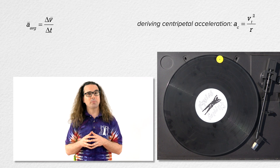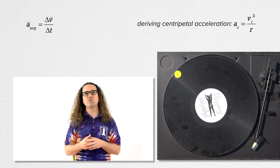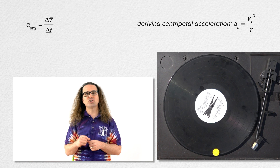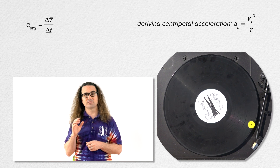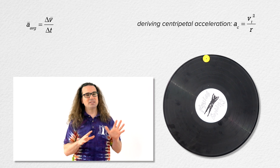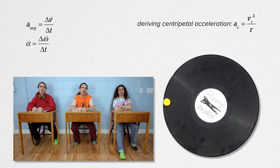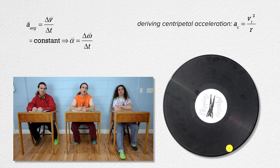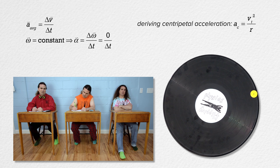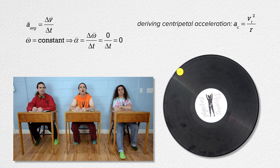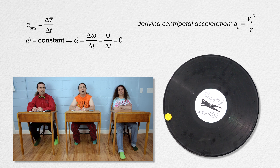Now let's look at a small yellow poker chip on a record where both the chip and the record are moving with the same constant angular velocity. The angular acceleration of the yellow poker chip is zero, because the change in angular velocity equals zero. So if the angular acceleration of the chip is zero, how would the chip have a linear centripetal acceleration?